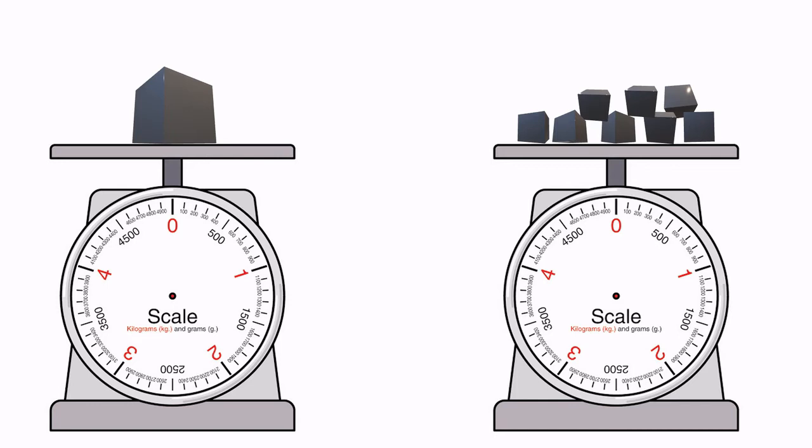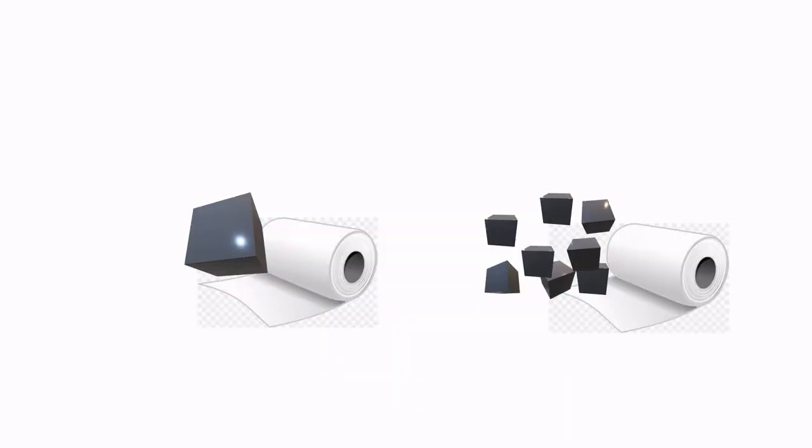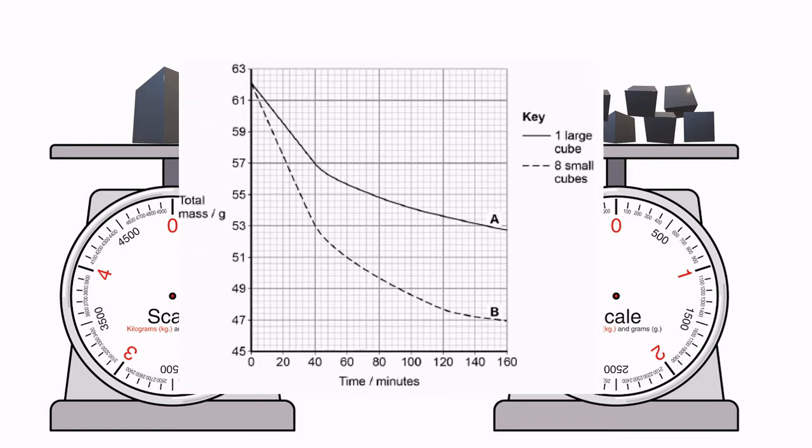After measuring their mass, the cubes were replaced back into the sucrose solutions for another 20 minutes, before being removed, dried, re-weighed and replaced again. This process then repeats for 160 minutes in total.